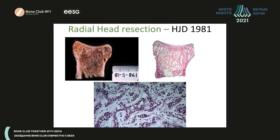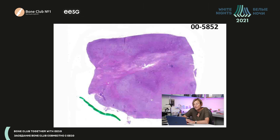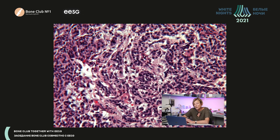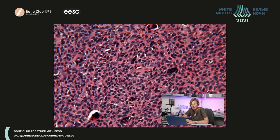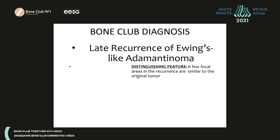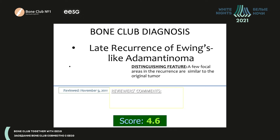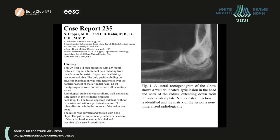You can see that when the tumor was removed in 1981 — a fragment of the radius was resected — and how it looked under the microscope. And here you see how it looked 20 years later. The histology is similar: chains of small cells separated by thin, quite delicate connective tissue septa. The diagnosis of the bone club was late recurrence of Ewing's-like adamantinoma.